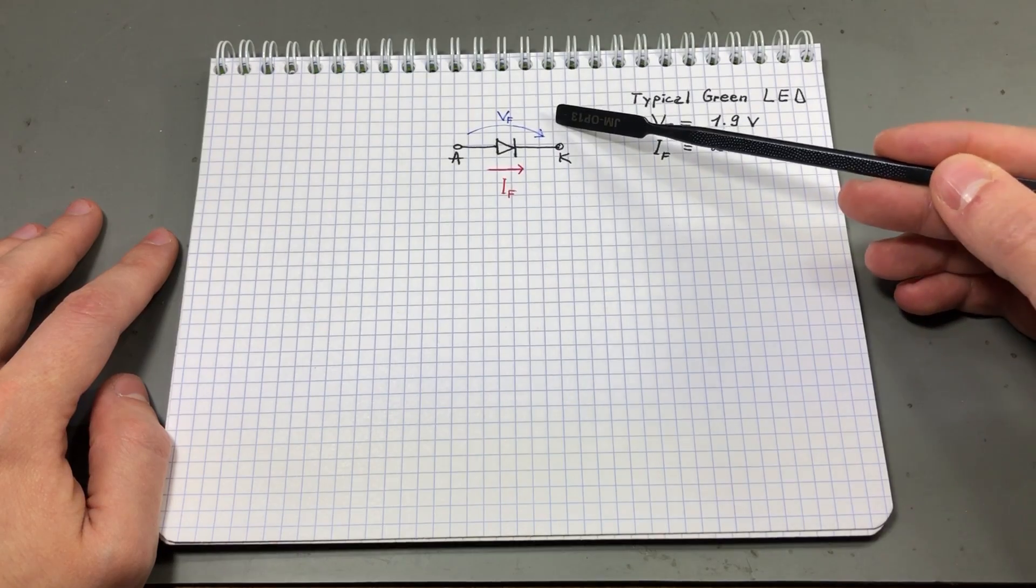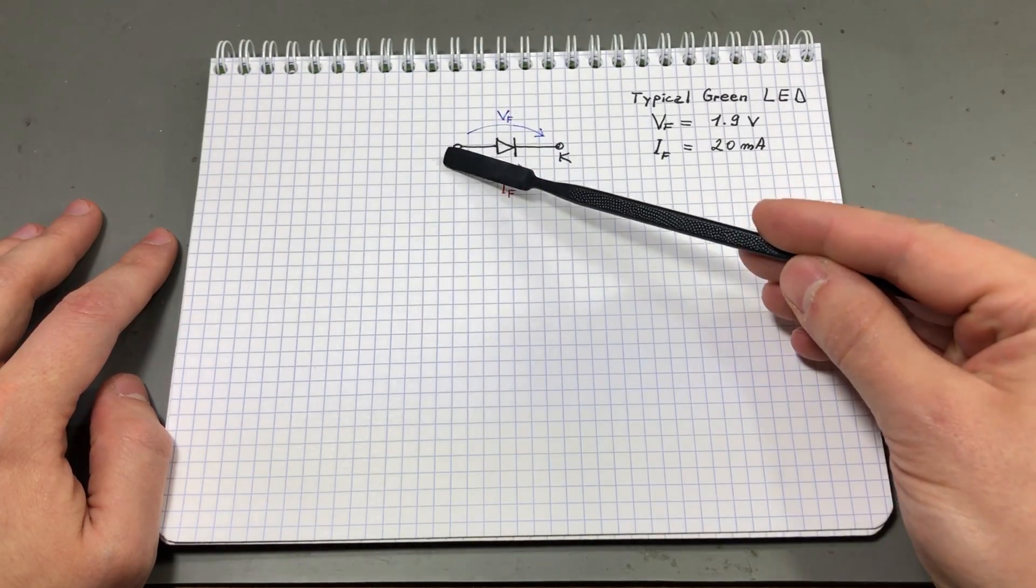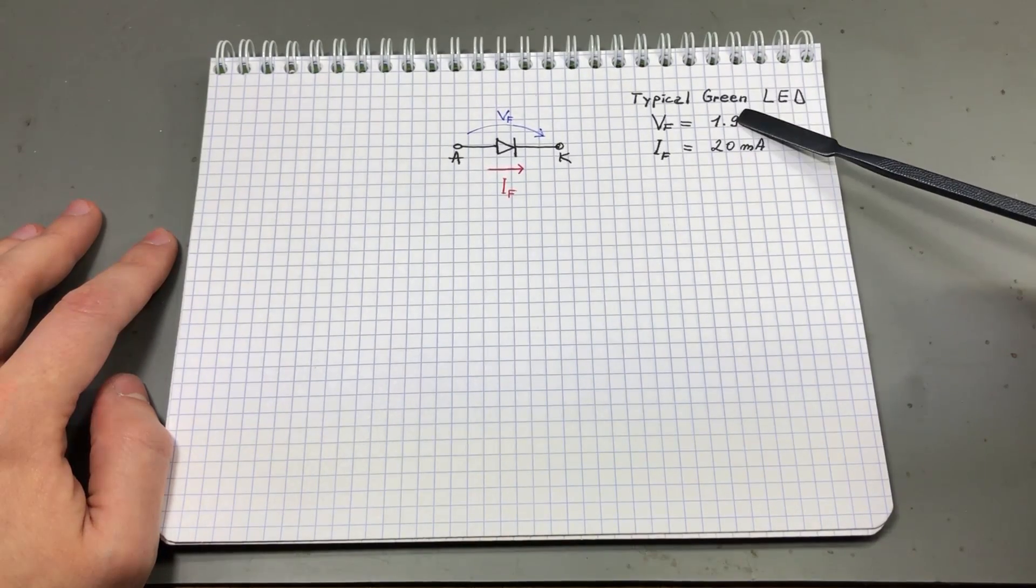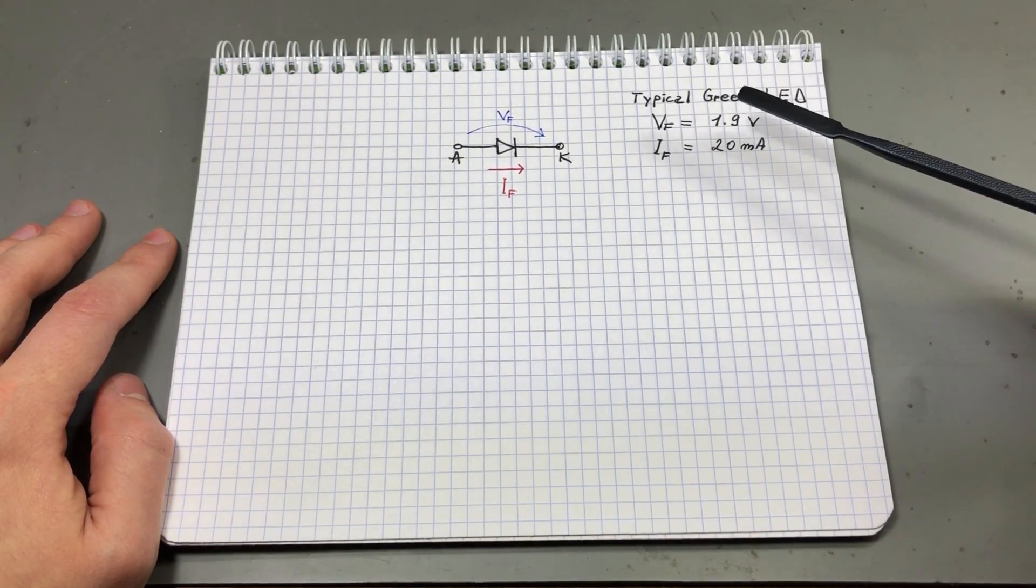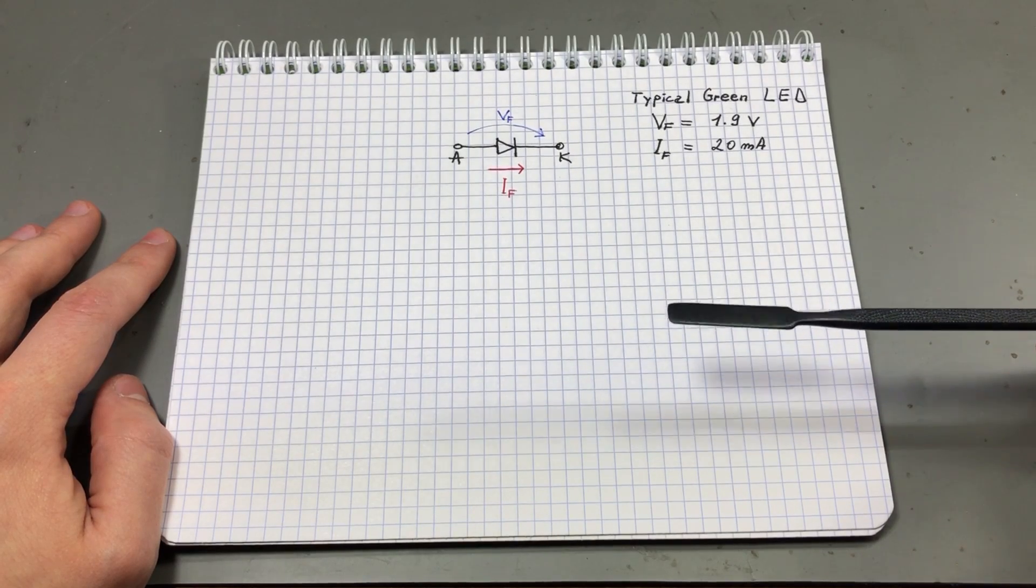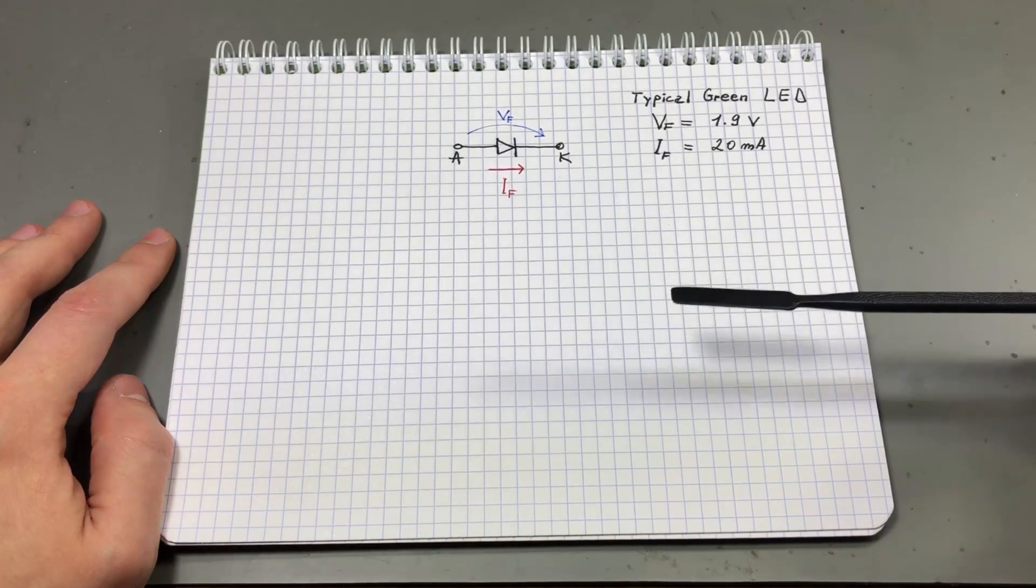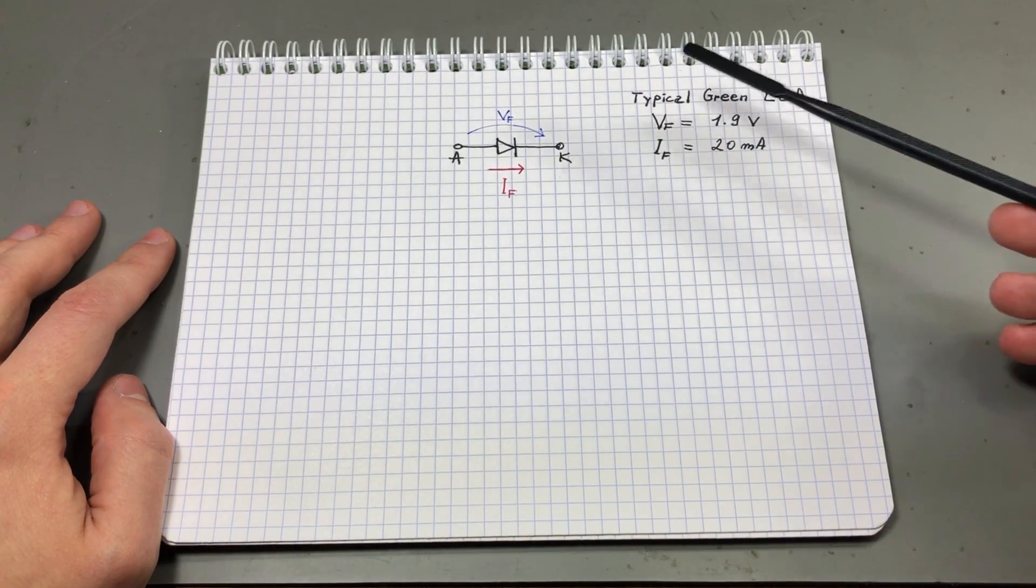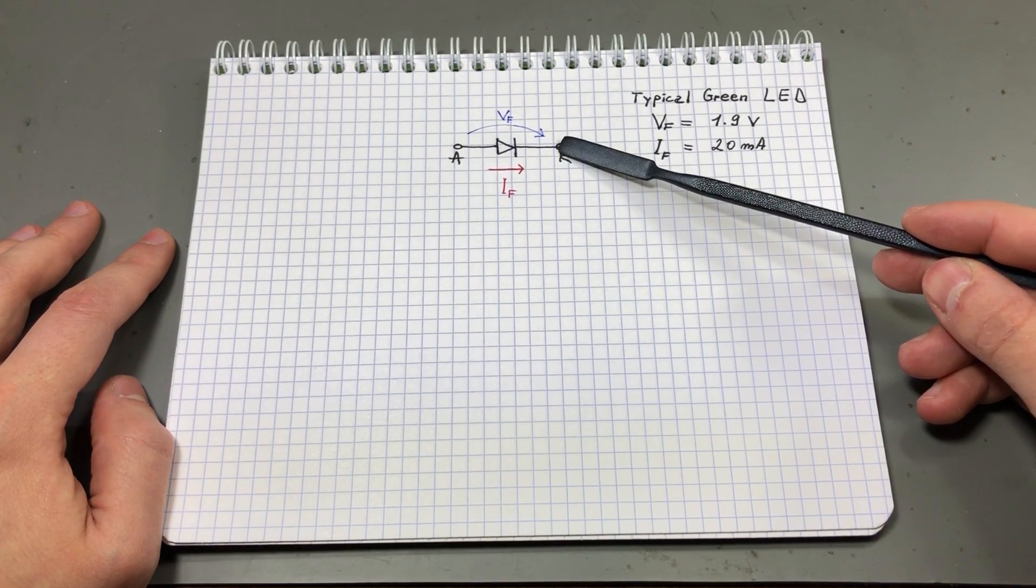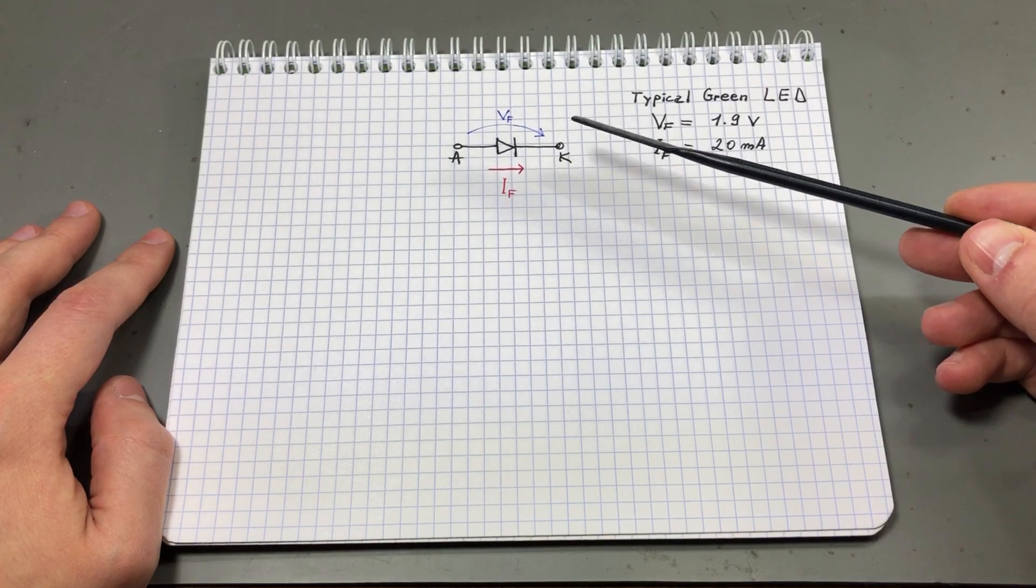So this LED will start conducting when the voltage across its anode and cathode will exceed 1.9 volts. So if you connect 1.5 volts between the anode and the cathode of the LED, it will not conduct, it will not turn on. If you apply for example 3 volts, it will start conducting and the LED will turn on.